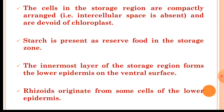In the storage region the cells are compactly arranged; they lack intercellular spaces and they are devoid of chloroplast — that is, chloroplast is absent in the cells of the storage region. Starch is present as reserved food material in the storage zone.